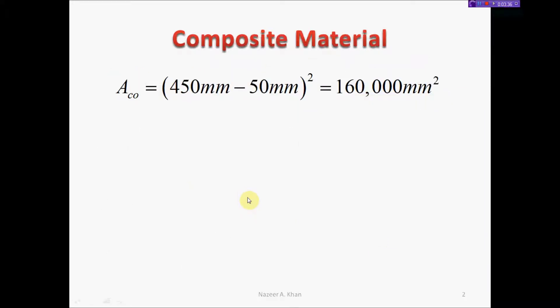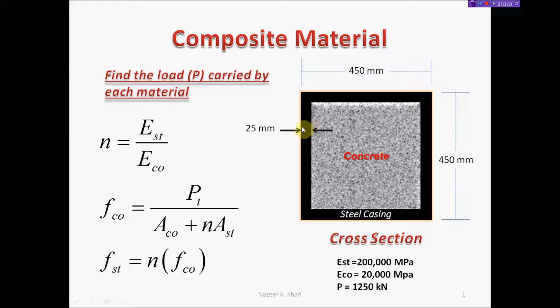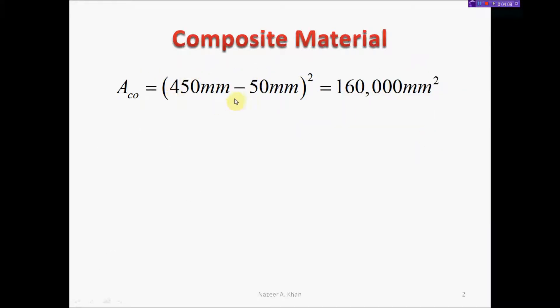The area of concrete is inside the steel casing. The outside dimension is 450 millimeters, with 25 millimeter wall thickness on each side. So the concrete dimension is 450 minus 50, which gives 400 millimeters. When we square 400, we get 160,000 square millimeters for the concrete area.